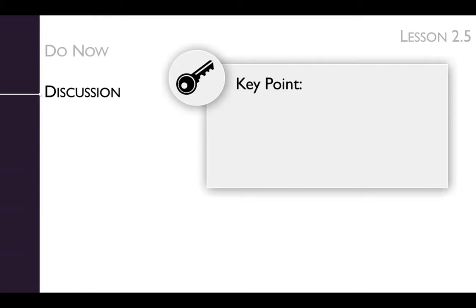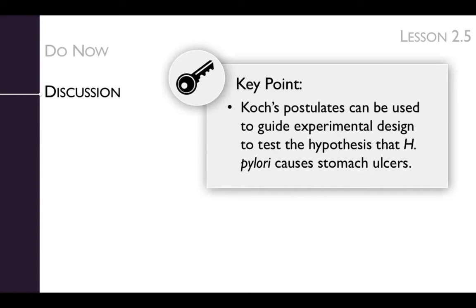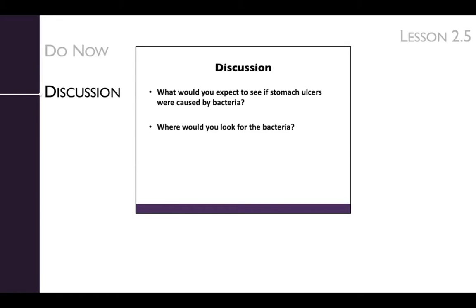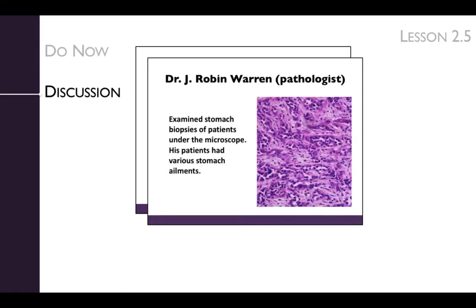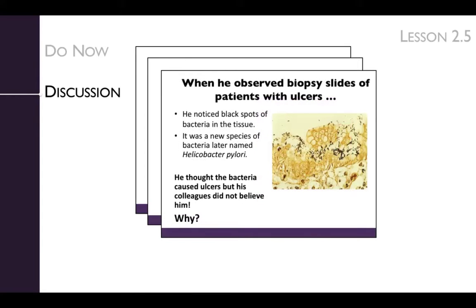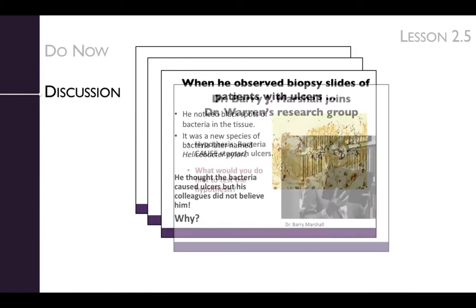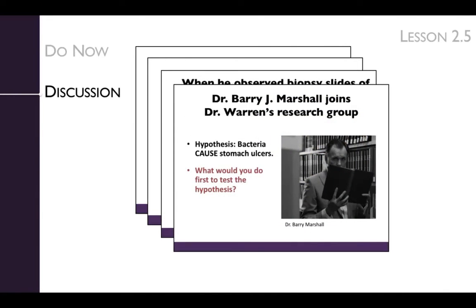The key point of the discussion is that Koch's postulates can be used to guide experimental design to test the hypothesis that H. pylori causes stomach ulcers. We begin the discussion by considering what we would expect to see if stomach ulcers are caused by bacteria. As Dr. Warren found, you would expect to see an association between the disease and the bacteria. This raises the question, are the bacteria causing the ulcers, or are they just bystanders?